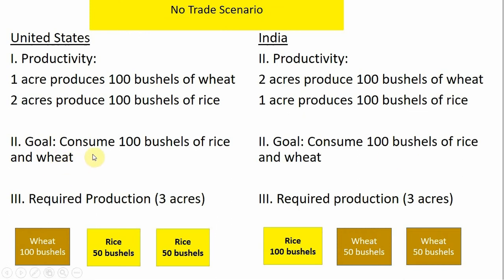If that's the case, the required production without trade would be as follows. In the U.S., these rectangles represent an acre, so you can achieve this desired consumption level by using one acre devoted to wheat production and two acres devoted to rice production — since it takes two acres to produce 100 bushels of rice, one acre gives you 50 bushels, the other acre the other 50 bushels. So three acres of land gives us our desired consumption level. In India, one acre of land gives you 100 bushels of rice, but since it takes two acres to produce 100 bushels of wheat, you'll need two acres and get 50 bushels of wheat off each of those acres.